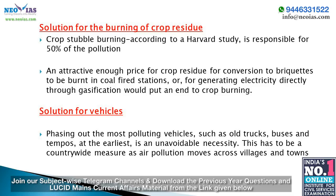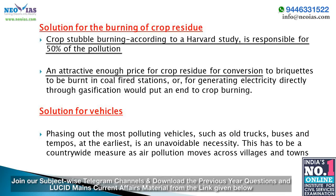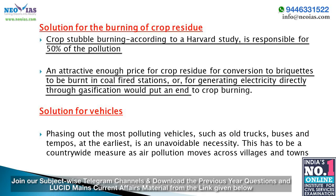Crop stubble burning is responsible for 50% of pollution according to a Harvard study. An attractive enough price for crop residue — for conversion into briquettes to be burnt in corn fire stations or for generating electricity through gasification — would put an end to crop burning. This transition would be driven by private investment without subsidy, with thermal plants offering a viable price for briquettes and distribution companies for electricity from crop residue.